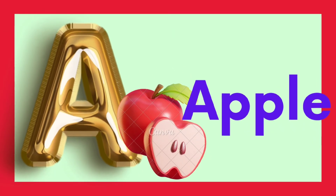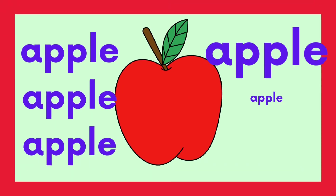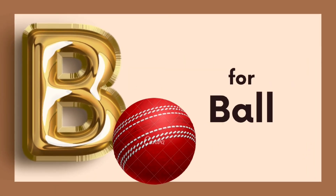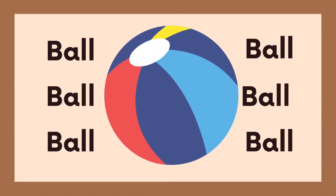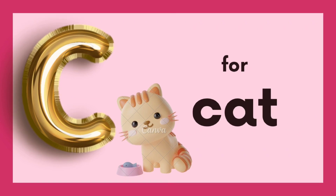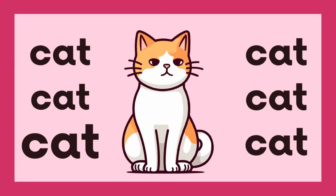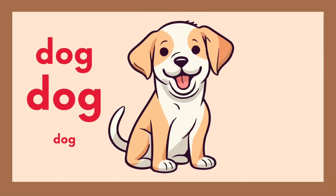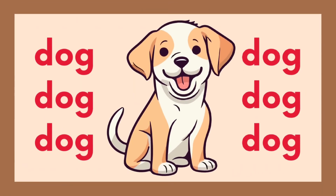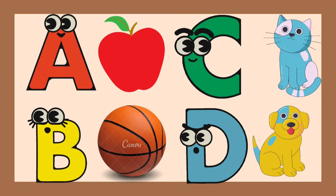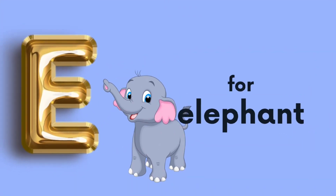A is for Apple, A-A-Apple. B is for Ball, B-B-Ball. C is for Cat, C-C-Cat. D is for Doll, D-D-Doll. E is for Elephant.